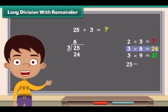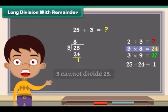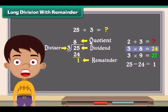Now subtract. 25 minus 24 is 1. We can see 3 cannot divide 25 as we get a remainder as 1. Here 25 is dividend, 3 is the divisor, 8 is the quotient, and remainder is 1.